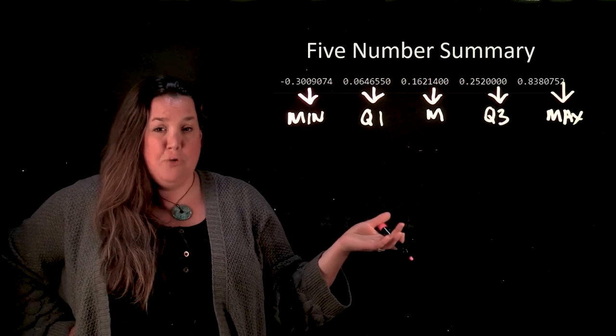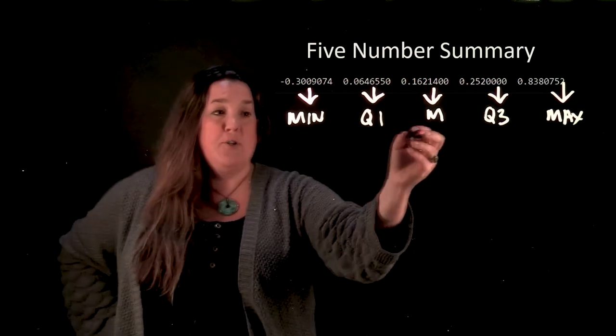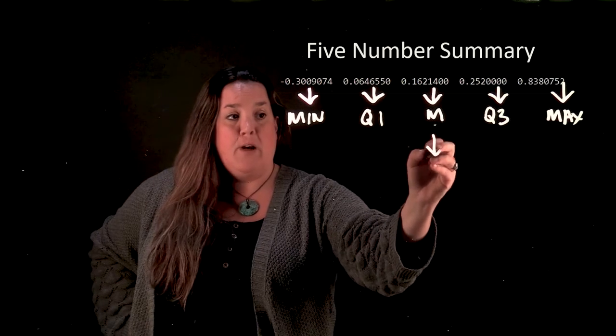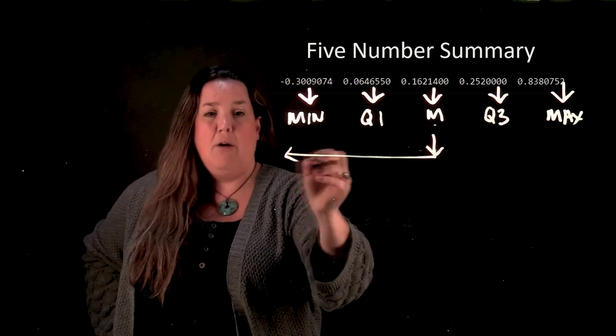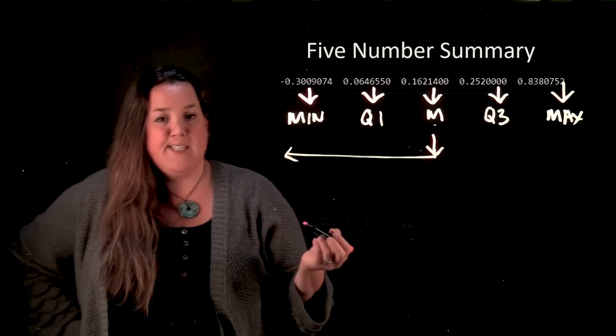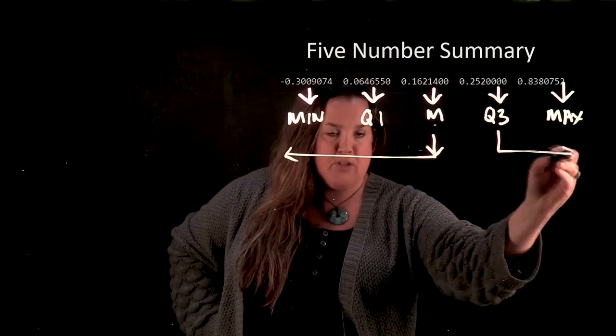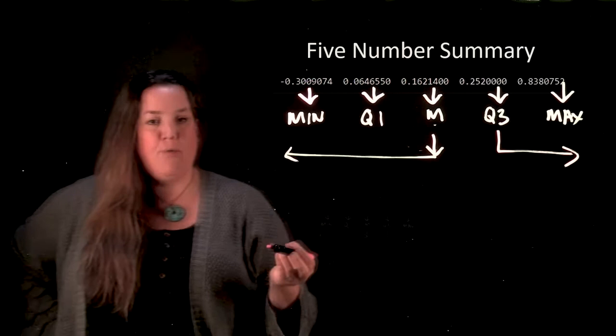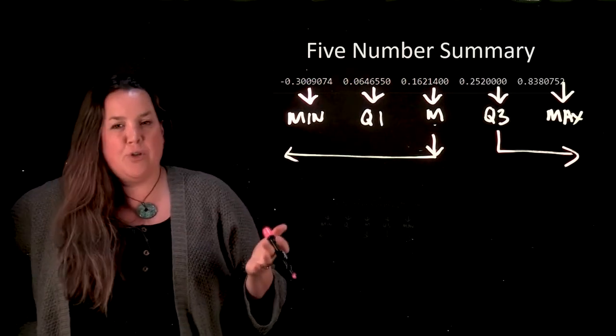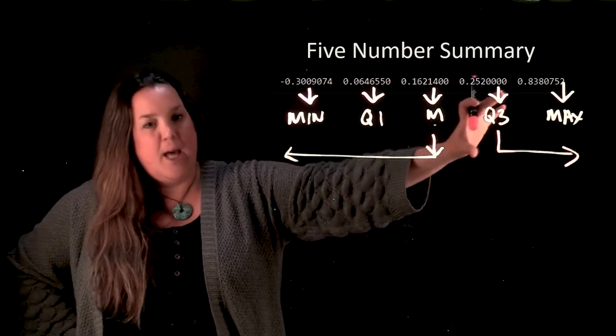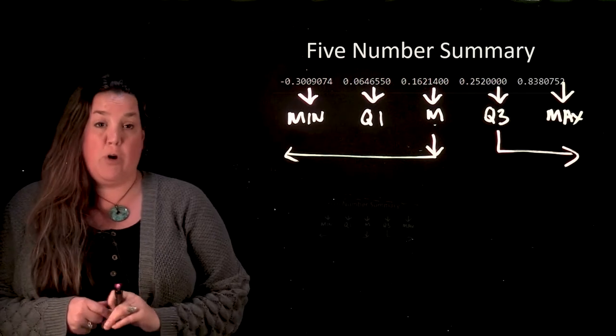And that's true because remember when you are interpreting this, you would say 50% of the happiness scores are less than 0.16. Or you can say 25% of the happiness scores are greater than 0.252. The only way that you could interpret that is if both the data and the five number summary are in order.